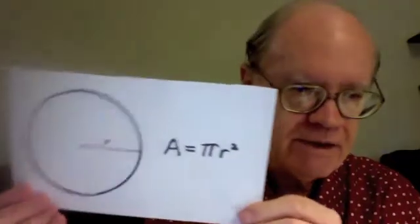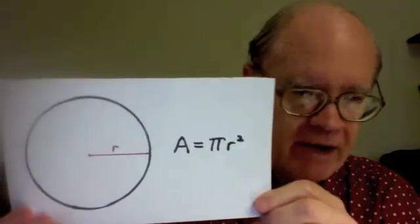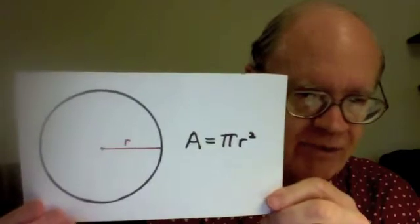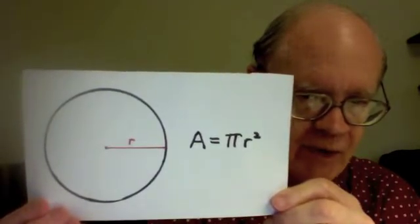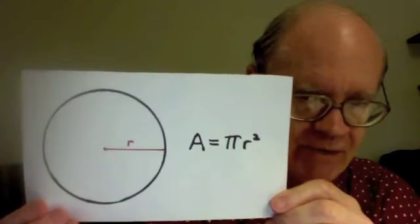The formula for the area of a circle is area equals pi times the radius squared. A equals pi r squared, meaning pi times the radius times the radius.